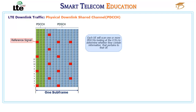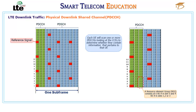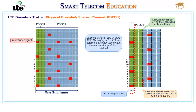Each UE will scan one or more PDCCHs, looking at the CCEs to determine whether they contain information pertaining to that UE. A resource element group consists of either 6 resources if appearing in slot 0, or 4 resource elements in slots 1, 2, and 3. A CCE occupies 9 resource element groups, and a single PDCCH might contain 1, 2, 4, or 8 CCEs. The PDSCH contains the data and occupies the remaining resource elements not used for other purposes, such as reference signals.